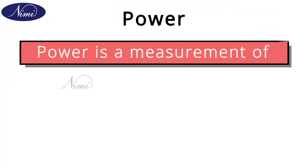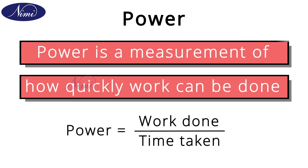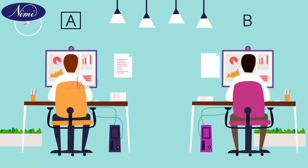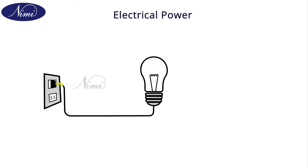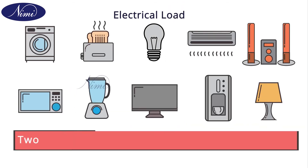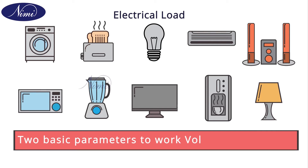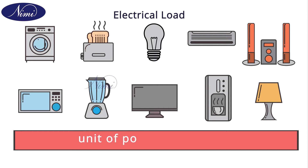Next we are going to see about power. In general, power is a measurement of how quickly a work is done. Power is work done by time taken. Suppose a work was allotted to two persons A and B equally — if person A could complete the work more quickly than B, it means person A has more power than person B. In electrical terms, power is the rate at which electrical energy is consumed by an electrical circuit. Any electrical load requires two basic parameters to work, that is voltage and current. So power is voltage into current, that is P is equal to V into I, and the unit of power is the watt.